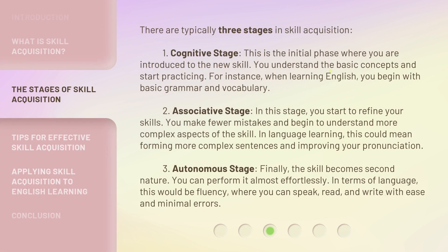There are typically three stages in Skill Acquisition. Stage 1: the Cognitive Stage. This is the initial phase where you are introduced to the new skill. You understand the basic concepts and start practicing. For instance, when learning English, you begin with basic grammar and vocabulary.